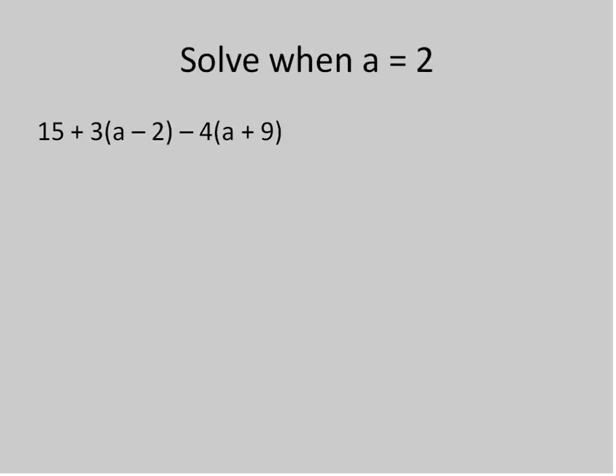Here's one more that's a little bit more complicated. This will be the last one that I solve in this mini lesson, showing you exactly the same principles that we saw before. 15 plus 3 times the quantity of 2 minus 2 minus 4 times the quantity of 2 plus 9. I'm going to solve inside the parentheses first. 2 minus 2 is 0. 2 plus 9 is 11.